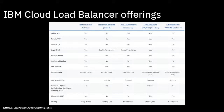High availability is built into both the IBM Cloud local load balancer and the IBM Cloud load balancer, and you have options to configure high availability for the other options as well. One of the most interesting things is around global load balancing — whether or not you can load balance across regions. The only one that can actually do global load balancing is the Citrix Netscaler Platinum version.